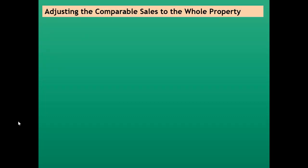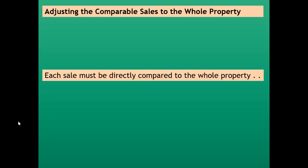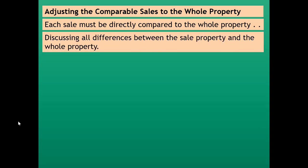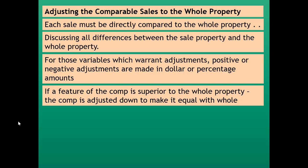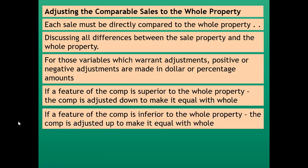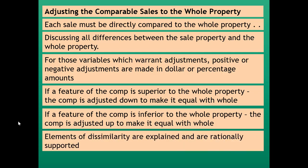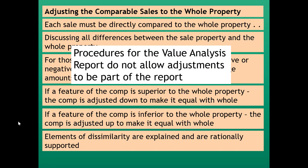Next, we discuss adjusting the comparable sales to the whole property. Each sale must be directly compared to the whole, discussing all differences between the sale property and the whole property. For variables which warrant adjustments, positive or negative adjustments are made in dollar or percentage amounts. If a feature of the comparable is superior to the whole, it is adjusted downward to make it equal to the whole; if inferior, it is adjusted upward. However, with the value analysis report, we do not allow adjustments to be made as part of the report.